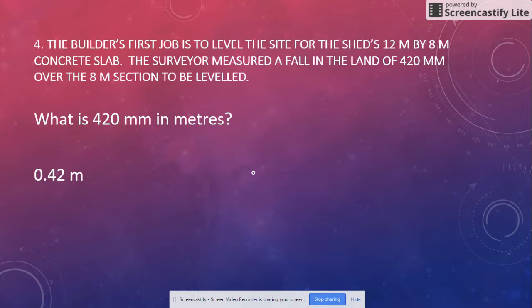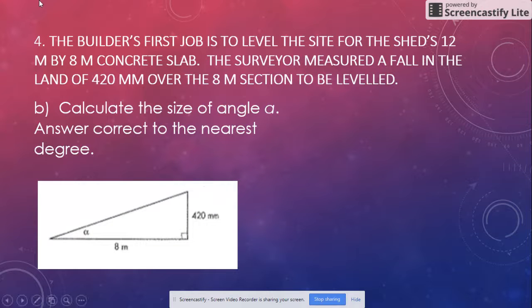Calculate the size of angle a to the correct degree. We've got our opposite here and our adjacent here. This is adjacent, this is opposite, so that's going to be tan. Our opposite is 420 over 8. We've got to change our 420 to meters, so we said there was 0.42.